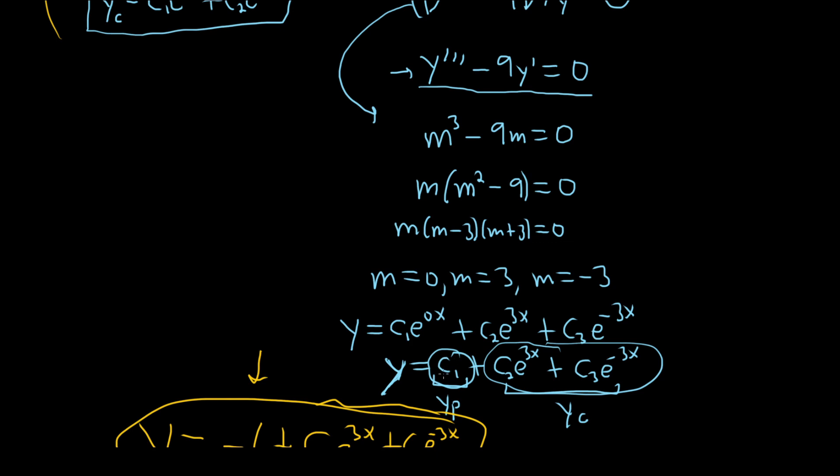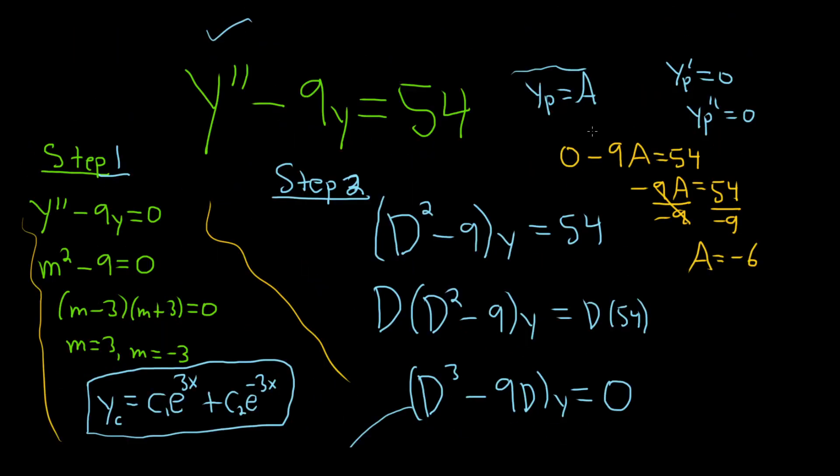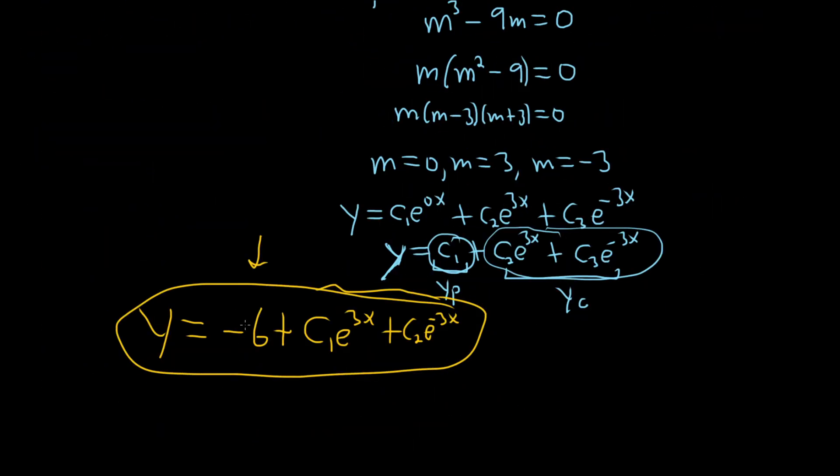Now you have the form of yp. And so as normal, if you've done the other method, you differentiate it, plug it back into your DE, find your constant, and then at the very end, your final answer is yp, which was negative 6, plus yc. I hope this video has been helpful.